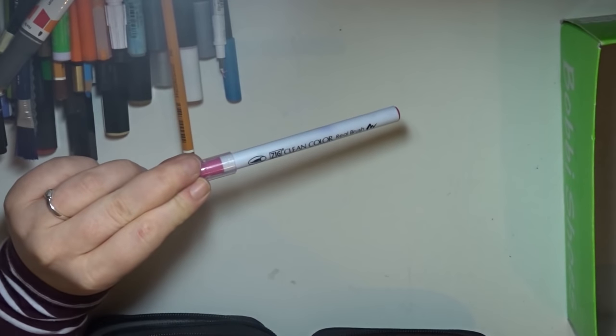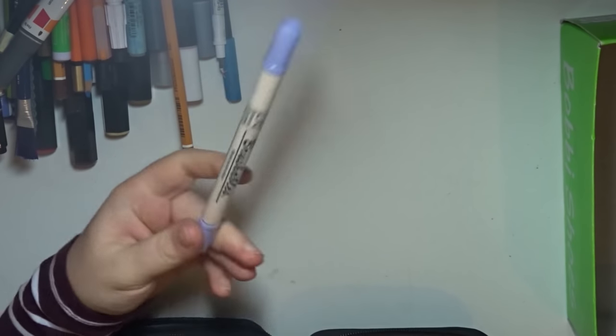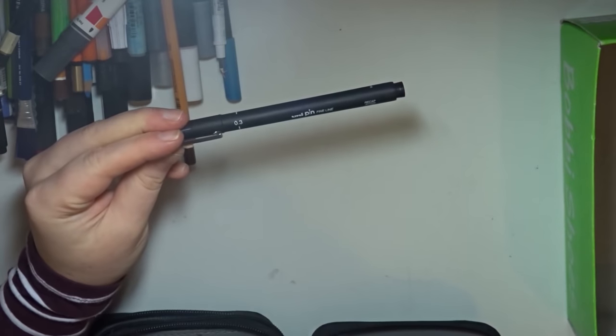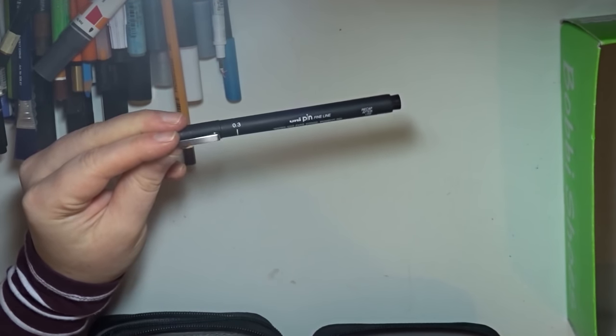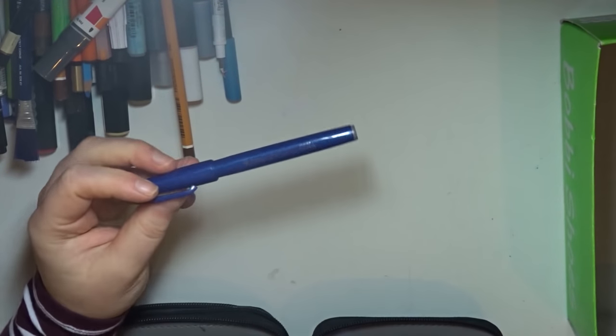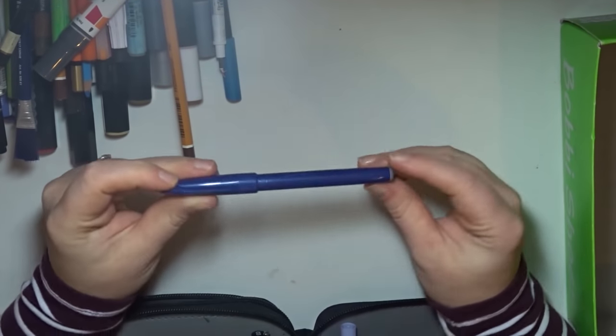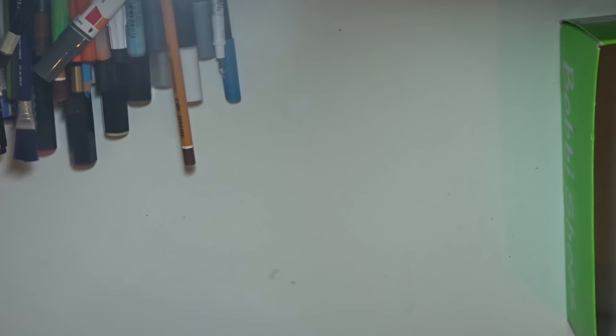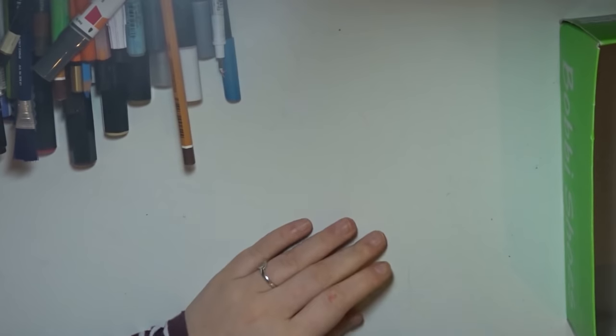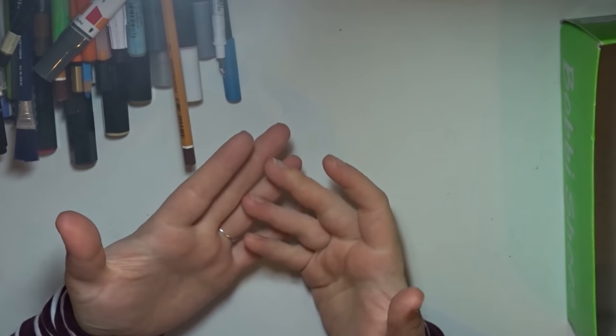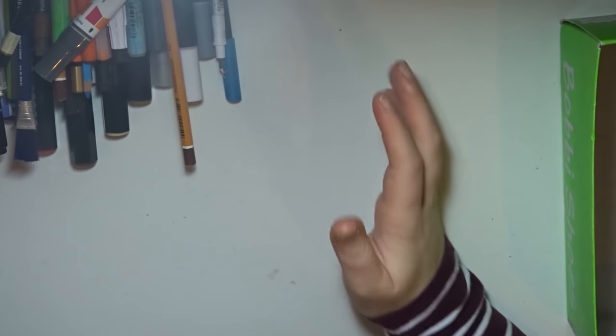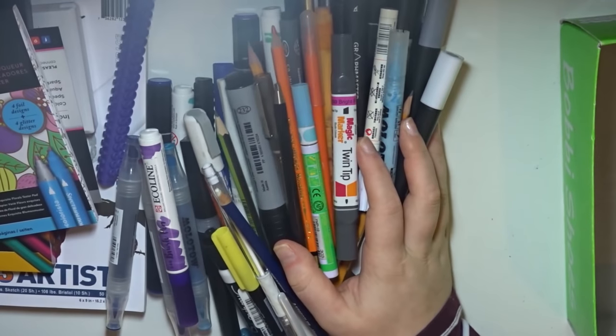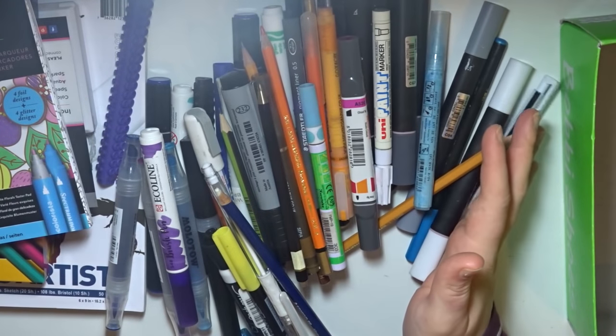Kuretake Zigg clean color rule brush, and we've got three of these. The Zigg brushables dual tip marker, Uni pin fine line 0.3, and the Pentel touch sign pen. And we also got a couple of microns as well and some brushes that I don't have on hand at the moment. So this is a lot of stuff in a year.